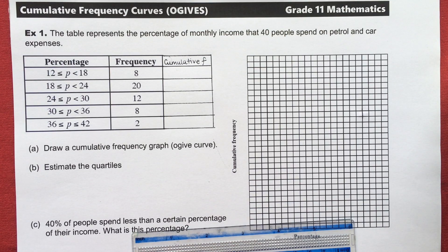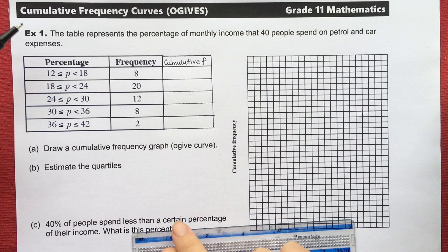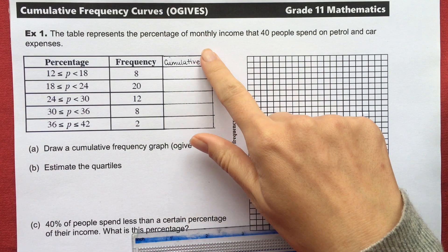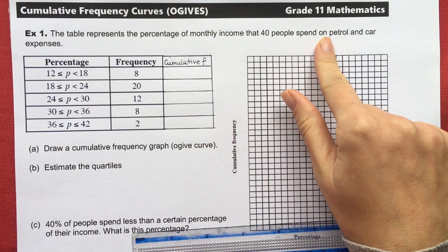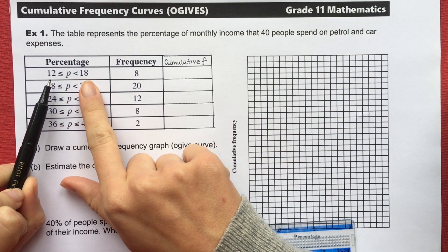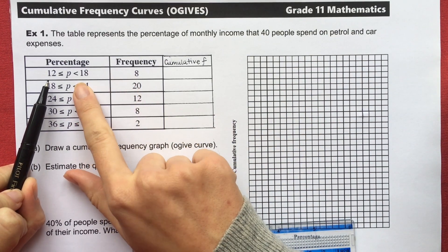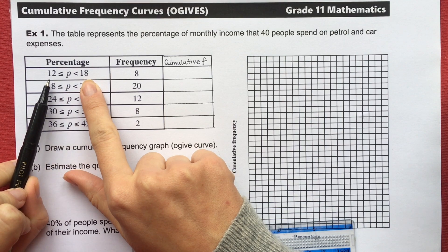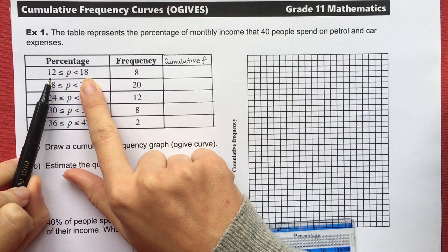Now that you know what an ogive is, or a cumulative frequency curve, let's go through an example. In this example the table represents the percentage of monthly income that 40 people spend on petrol and car expenses. In this first class interval there are 8 people who spend between 12 and 18% of their income on their car expenses and petrol.